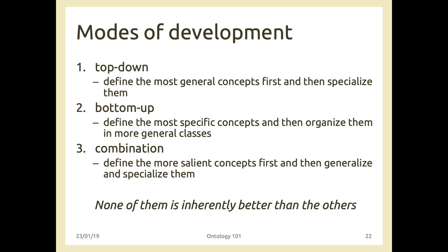There are three modes of ontology development: top-down (define most general concepts first, then specialize), bottom-up (define most specific first and move up), and mixed. There is no methodology better than the other because it's a long process — you may start with generic concepts, specialize them, then discover you forgot some generic concept or need to move a subclass. An instance of a subclass is also an instance of its superclass, which is useful when querying the ontology.